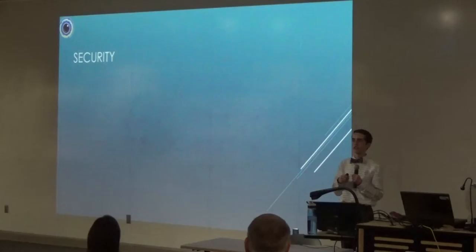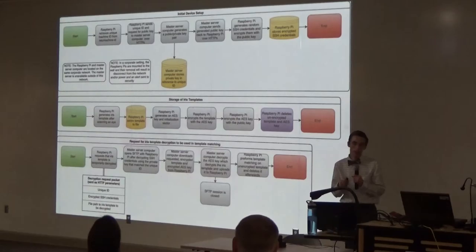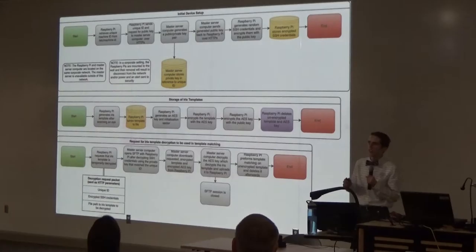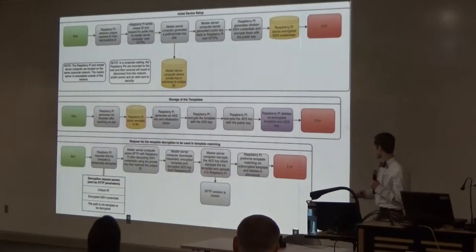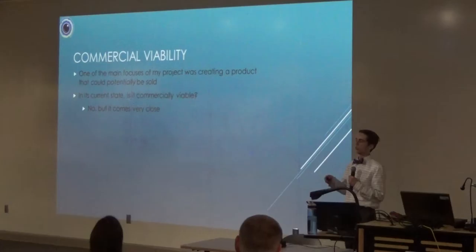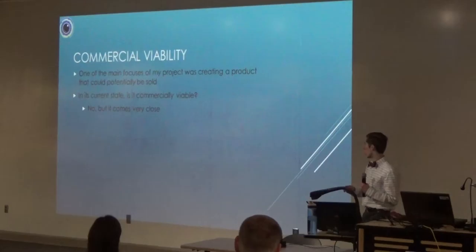Now I'll talk about the security of my product. I wanted something potentially commercially viable that was highly secure for use in a corporate world. I drafted a flowchart for the security model. It's highly complex, but essentially it establishes a degree of trust with the Raspberry Pi as well as some sort of central server that allows iris templates to be encrypted and stored in a secure fashion.